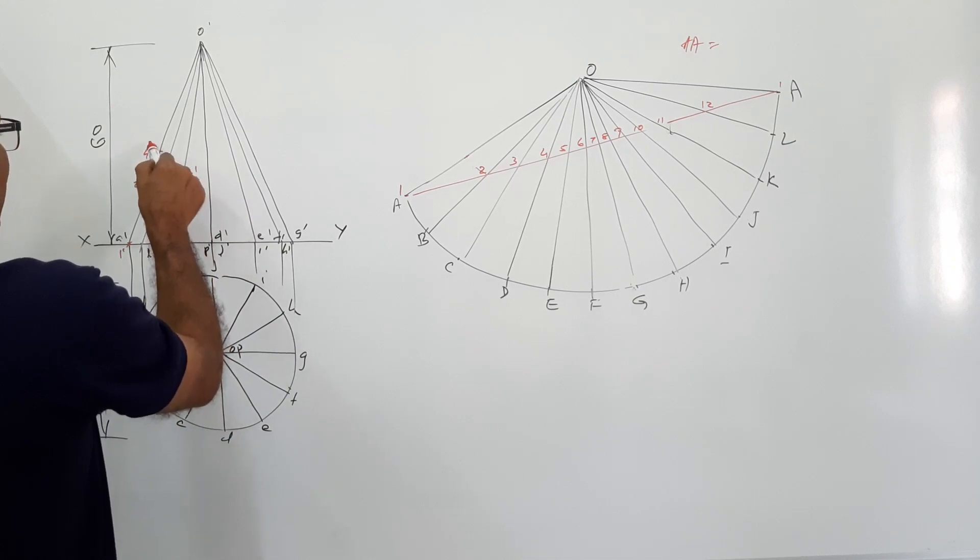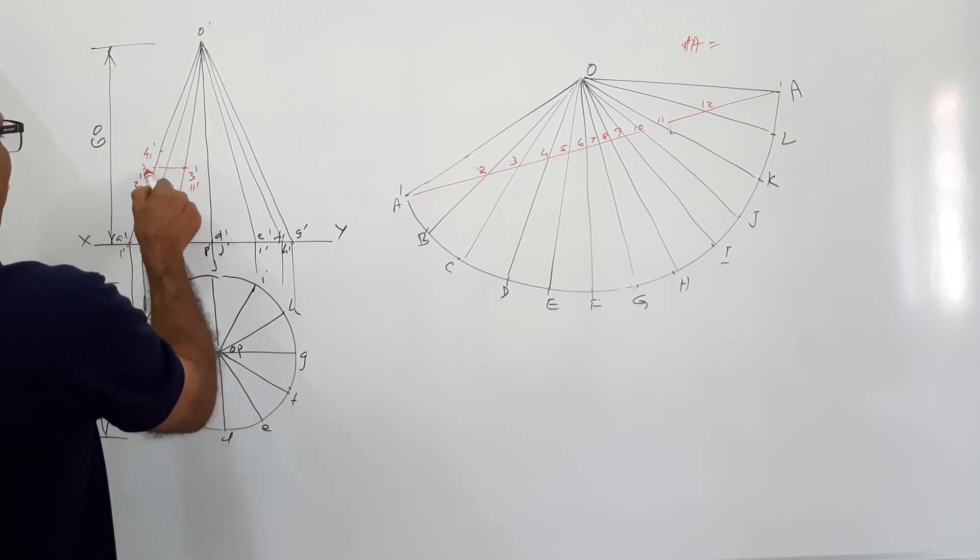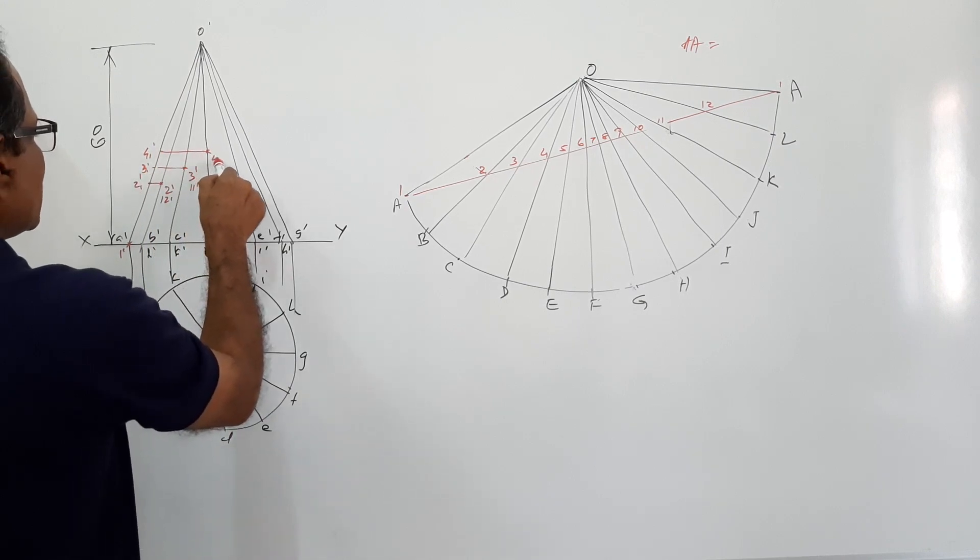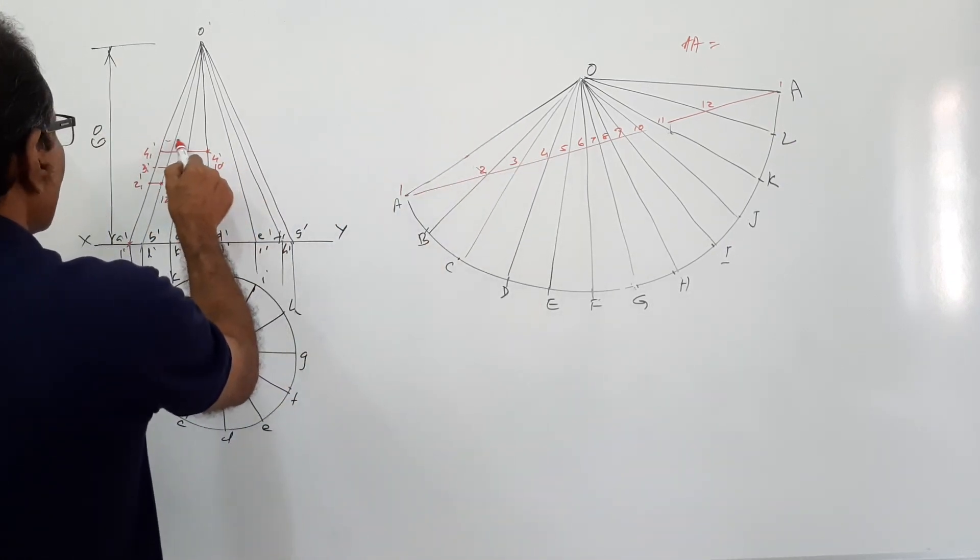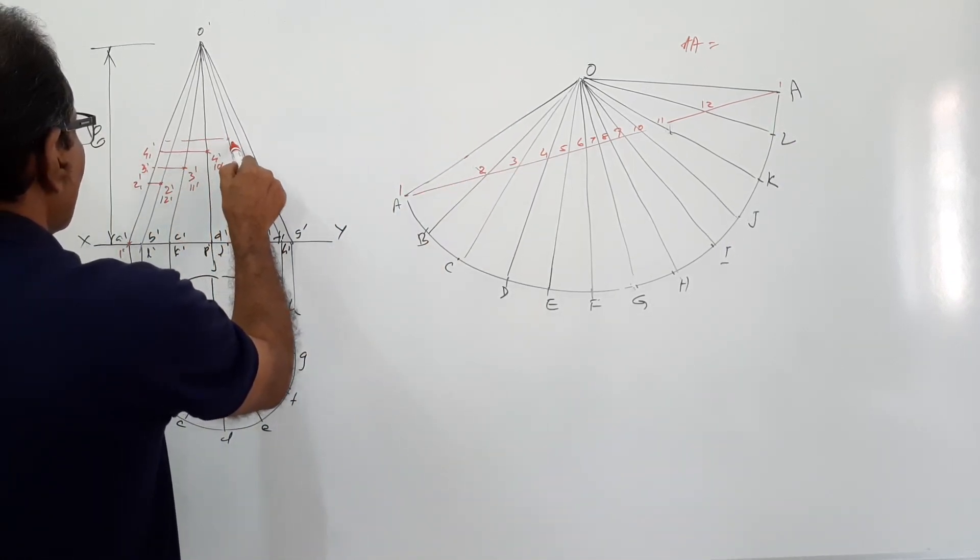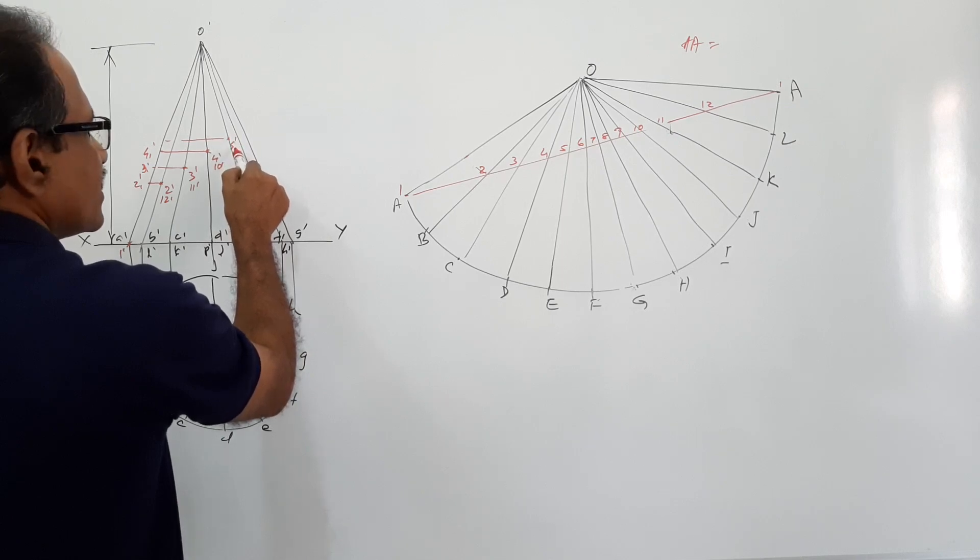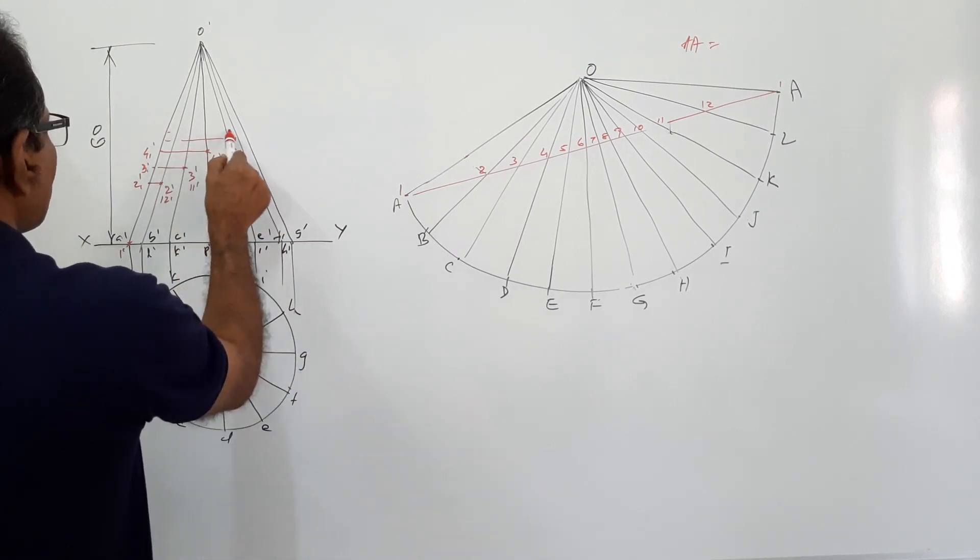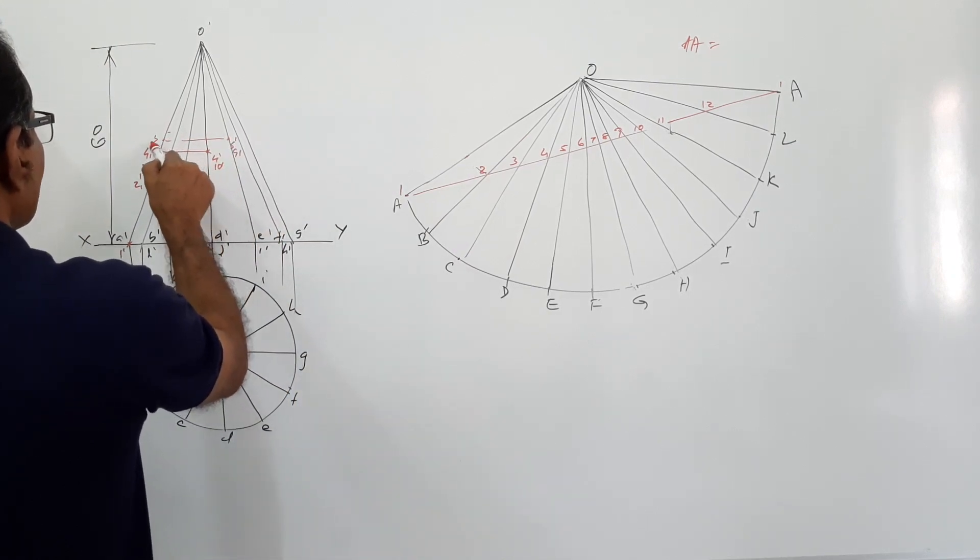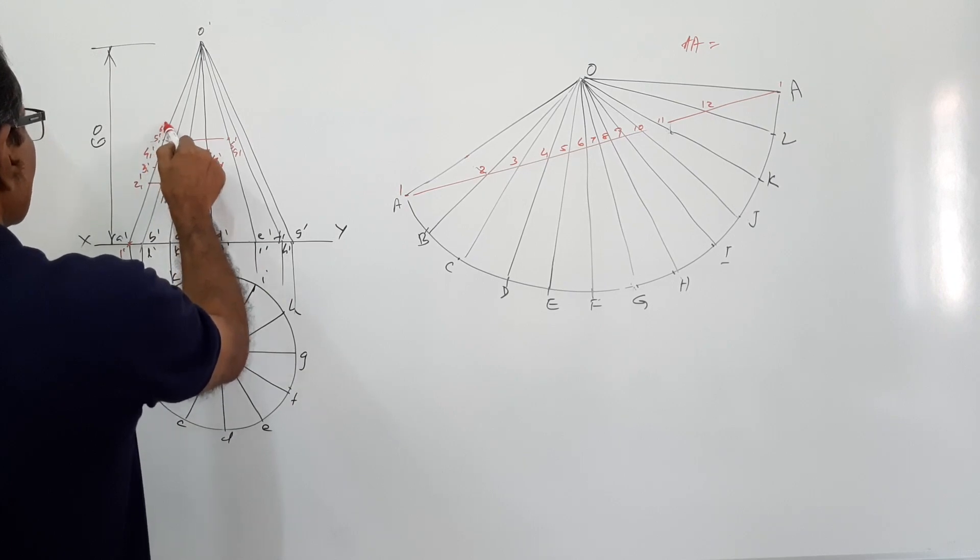4-1 dash, this is 3-1 dash, this is 4-1 dash. This is 4 dash 10 dash. Take O 5. 5 dash, 5 dash, 9 dash.